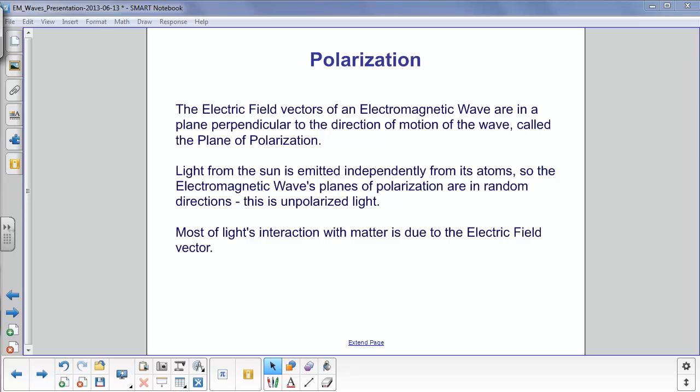Light from the sun is emitted independently from its atoms, so the electromagnetic wave's planes of polarization are in random directions. This is unpolarized light.